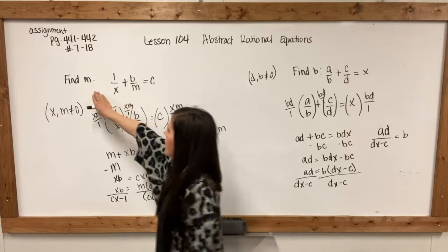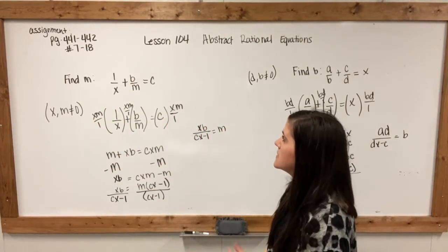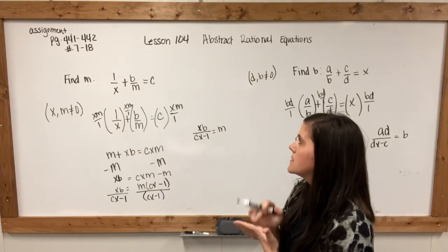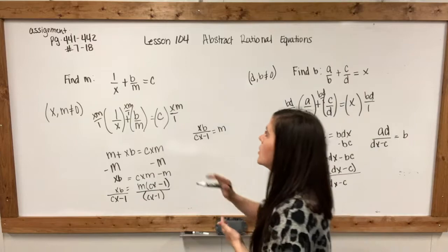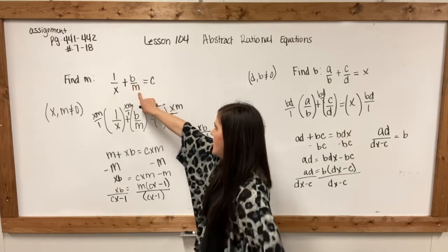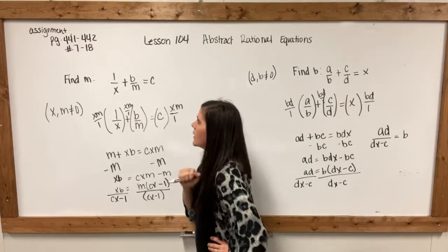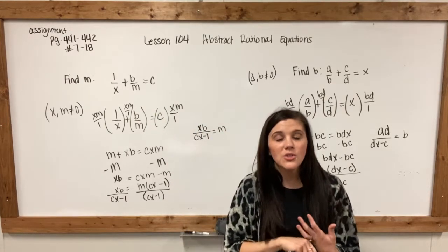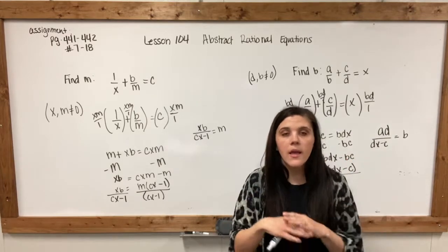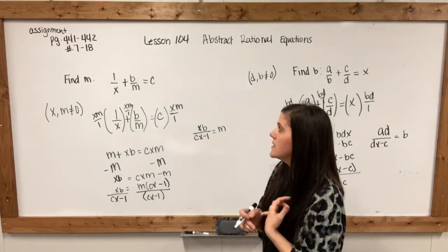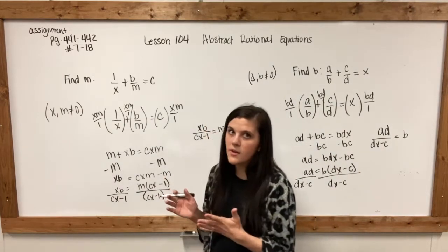For this first equation, it says find m, and it gives this fraction: 1/x + b/m = c. We are trying to get this m by itself. The first thing we're going to do is eliminate the denominators — that is the first step in getting m by itself.